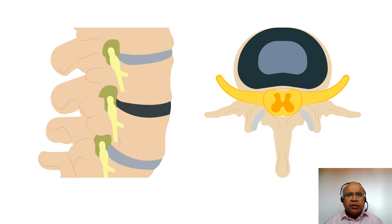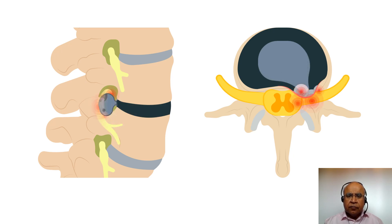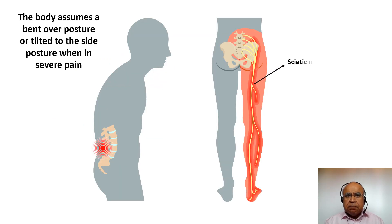On rare occasions, the dehydrated disc fails further and the nucleus pulposus may leak out of the annulus fibrosis. This is called a disc prolapse or a herniated disc. You can see how the disc is now pressing on the nerve, which can cause severe pain along the path of that nerve. The disc prolapse presses on the nerves that form the sciatic nerve, and hence the patient experiences severe leg pain.